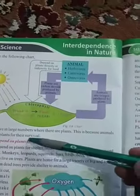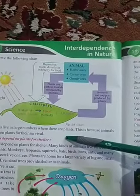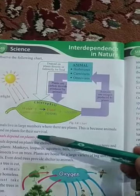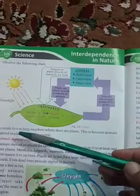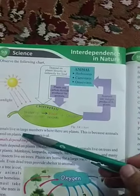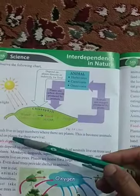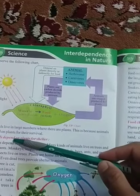Now we will start our chapter. Animals live in large numbers where there are plants. Where there are plants, animals also live in large numbers. This is because animals depend on plants for their survival.